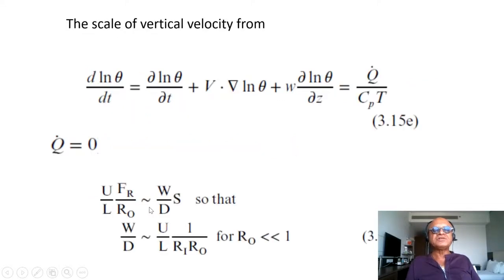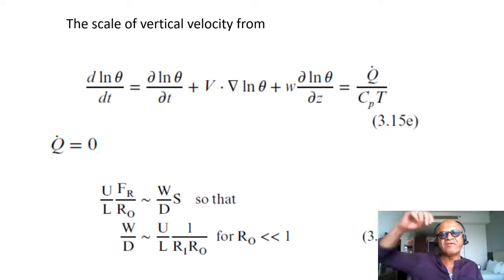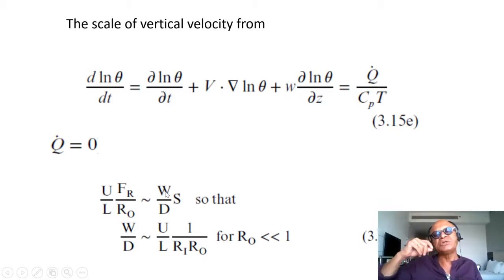Then the vertical velocity scale comes from the thermodynamic equation or the energy equation in terms of d ln θ/dt, which is expanded out as we saw before where the heating term is 0, so there is no convective heating or other diabatic heating. Then you can write the scales as U/L·Fr/R ≈ the scale of vertical velocity (whenever we write these capital quantities they are the dimensions or scales in that direction) divided by the scale of vertical height times S, the static stability in terms of dθ/dz.